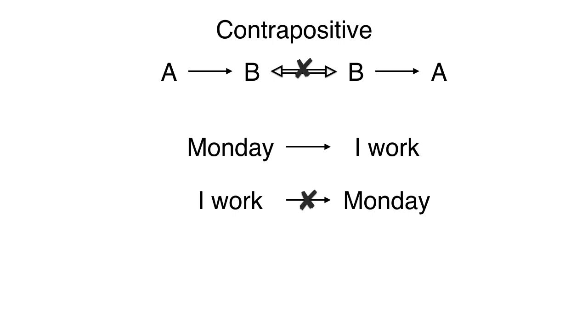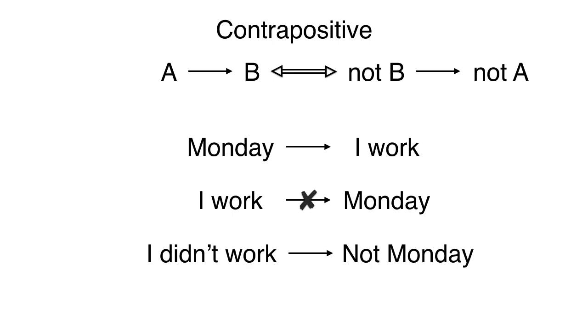If we have events A and B, it is a common misconception that A implies B is equivalent to B implies A. This is not true. For example, if it is Monday, then I go to work. But if I go to work, that doesn't necessarily imply that it is Monday. It could be any other day of the week. What is true is the contrapositive, which says that A implies B is equivalent to not B implies not A. In this way, this is equivalent to say that if I didn't work, then for sure it was not Monday, because I work on Mondays.